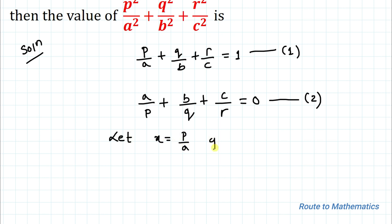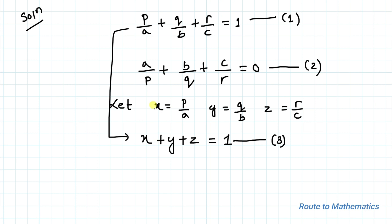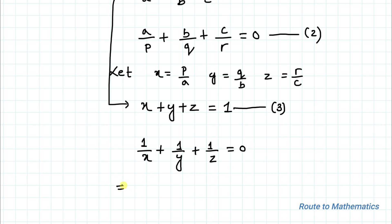In the next step, let's take x = p/a, y = q/b, and z = r/c. By substituting these values in equation 2, equation 2 becomes 1/x + 1/y + 1/z = 0.